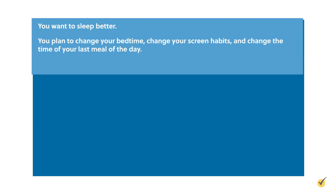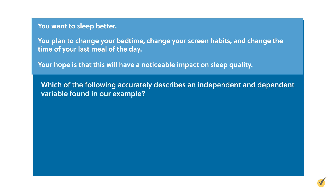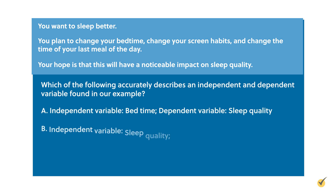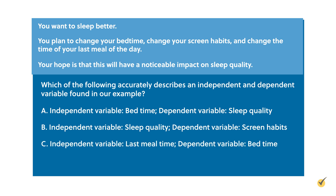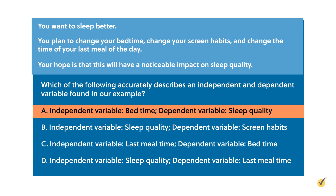Let's put your knowledge to the test. Let's say you want to sleep better. You plan to change your bedtime, change your screen habits, and change the time of your last meal of the day, hoping this will have a noticeable impact on sleep quality. Which of the following accurately describes an independent and dependent variable? A. Bedtime and sleep quality. B. Sleep quality and screen habits. C. Last mealtime and bedtime. D. Sleep quality and last mealtime. The correct answer is A. The time you go to bed is an independent variable, which affects your sleep quality — the dependent variable.